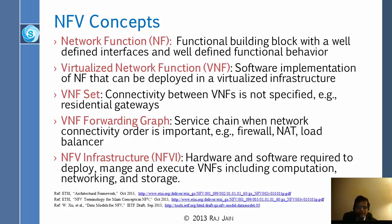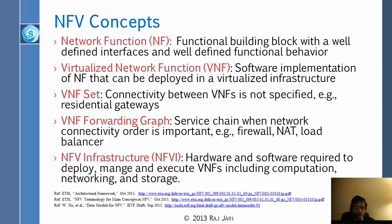A forwarding graph is a connected graph of VNFs where you specify that when packets come in, they go to function 1, then function 2, and so on. The next slide shows the graph. Connectivity is important in cases like firewall, NAT, and load balancer — you cannot do them in any order; you have to do them in a particular order. NFVI is the NFV infrastructure.